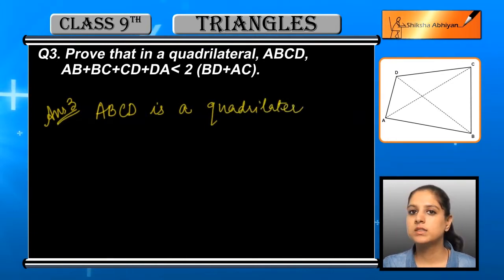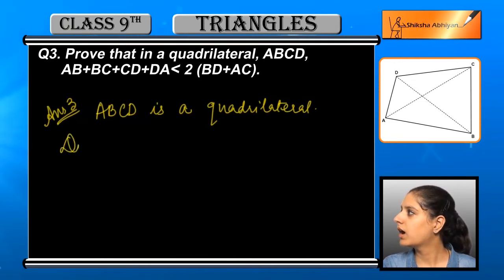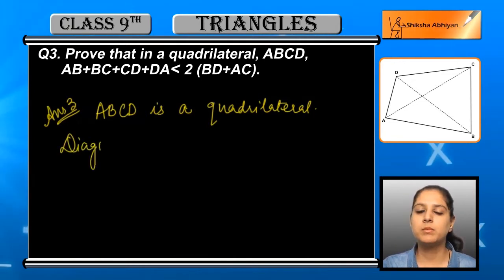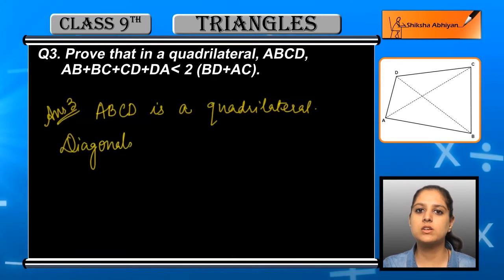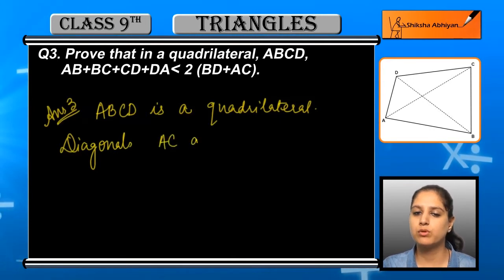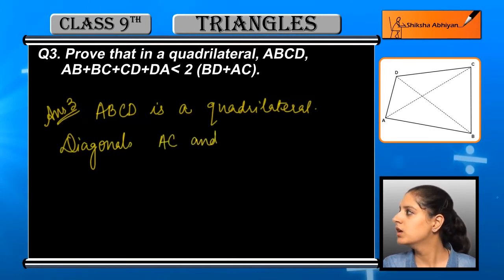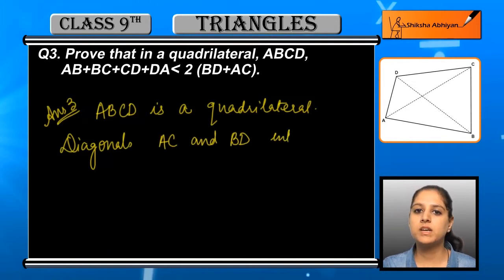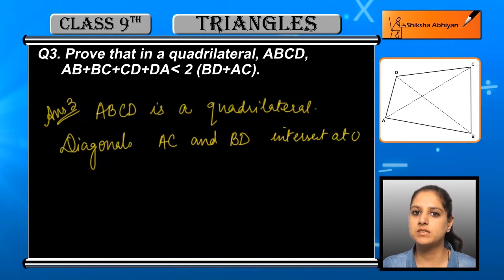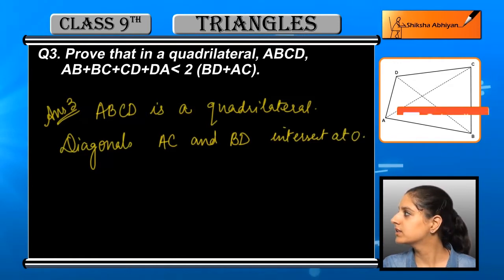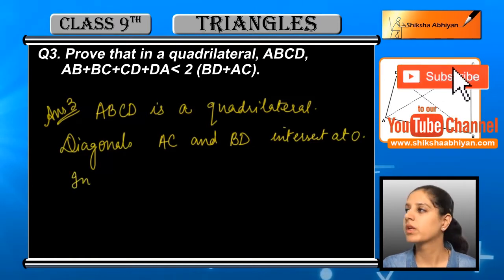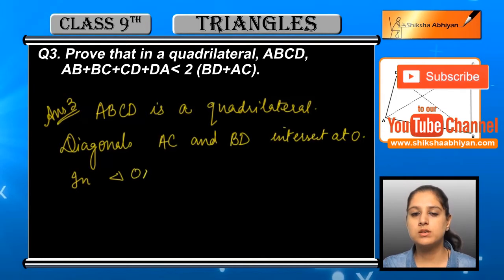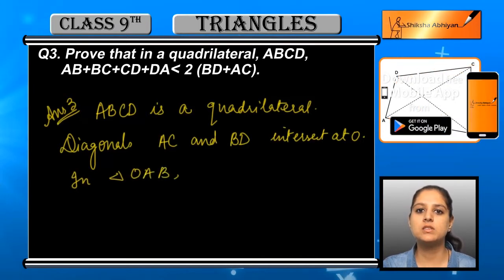The quadrilateral given to us is ABCD. If we draw the diagonals, in this case the diagonals are AC and BD. Since ABCD is a quadrilateral, the diagonals AC and BD will obviously intersect at some point — they are intersecting at a point O.